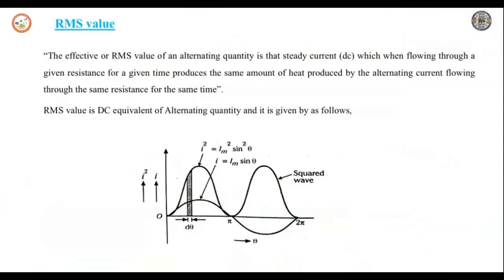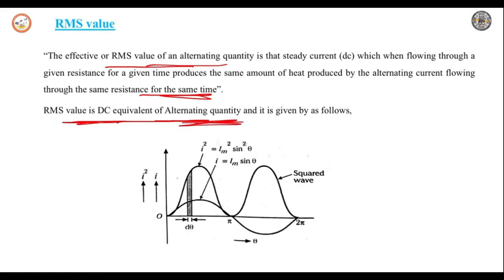This RMS value can be called the DC equivalent of the alternating quantity — that is the direct current equivalent of the alternating quantity. That is the meaning of RMS value. The definition is: the RMS value of an alternating quantity is that steady current which when flowing through a given resistance for a given time produces the same amount of heat produced by the alternating current when flowing through the same resistance for the same time. Now let us derive this RMS value. As the name indicates, it is a root mean square value.